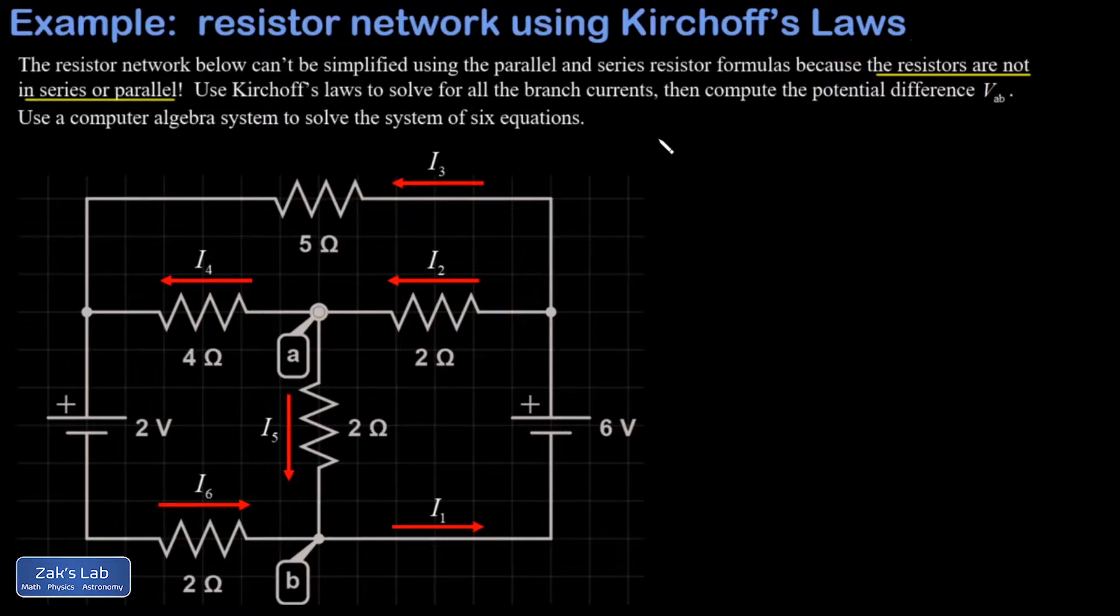So what I'm going to do here is start with Kirchhoff's voltage law. And I'm going to make sure that I touch every single circuit element with my voltage loops, because I know my equations must involve every resistor and power source. So I'll just go ahead and call this loop 1. We're going to stay inside that upper loop. I'll call this loop 2, the lower left loop, and loop 3, the lower right loop.